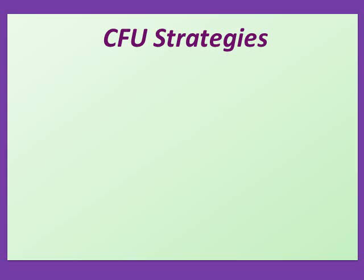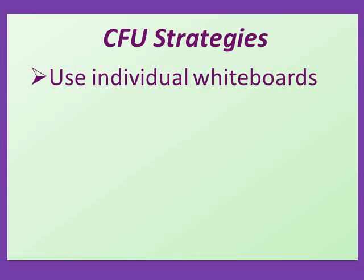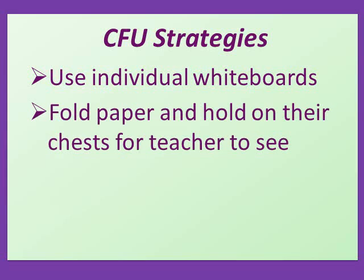Some additional strategies: you can ask the question and instead of calling on individuals, they could all have their own individual whiteboards, write the answer, and hold it up so you can see it. If you don't have whiteboards, you can take 8½ by 11 paper, fold it in half, then fourths, then eighths, and they can write the answer on the little rectangle of each eighth. They hold it up on their chest where you can see the answer but their neighbors cannot, and they keep flipping the paper to a blank section.